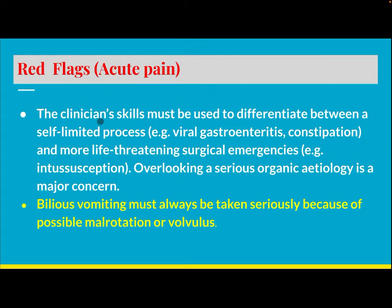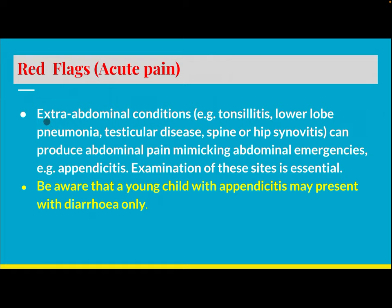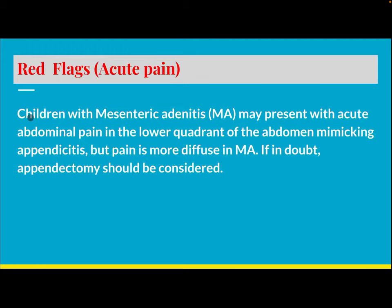Red flags in acute abdomen: the clinician's skill must be used to differentiate between a self-limited process like viral gastroenteritis or constipation, and a life-threatening surgical emergency like intussusception. Overlooking a serious organic etiology is a major concern. Bilious vomiting must always be taken seriously because of possible malrotation or volvulus. Extra-abdominal conditions — tonsillitis, lower lobe pneumonia, testicular disease, spine or hip synovitis — can produce abdominal pain mimicking abdominal emergencies like appendicitis.